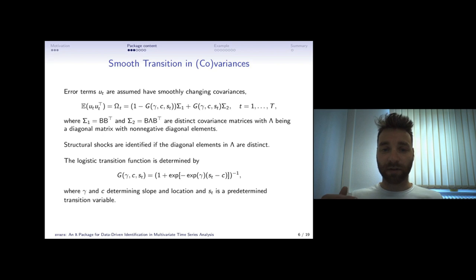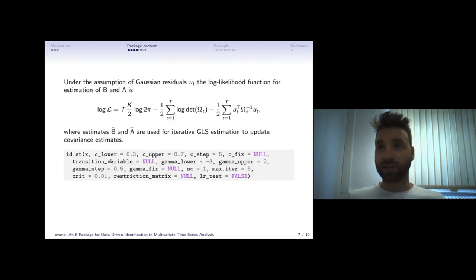If one structural shock doubles its covariance and the other one halves its variance this allows us to identify these structural shocks. We model the smooth transition between these covariance states with a logistic transition function and estimate the parameters via a Gaussian log-likelihood function.